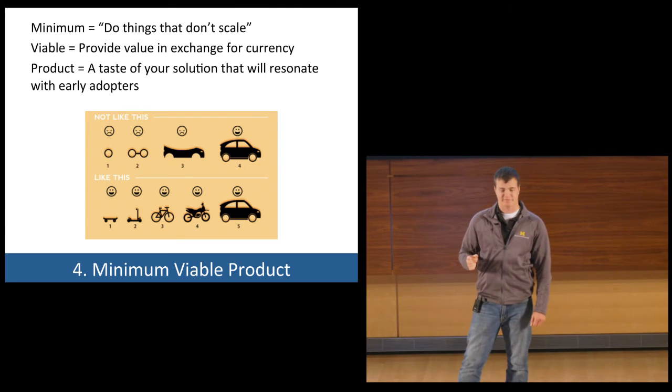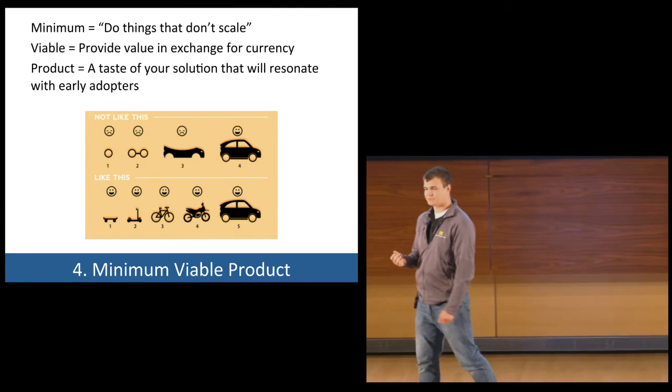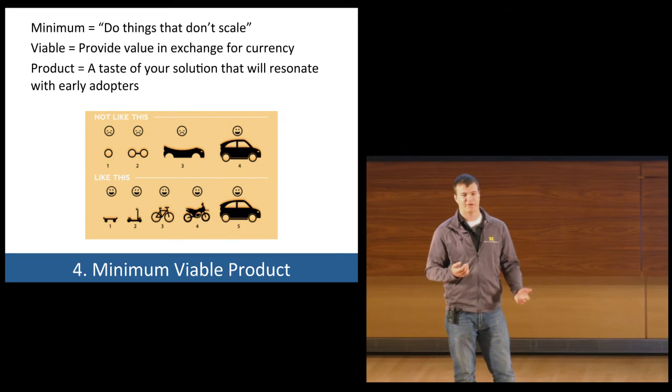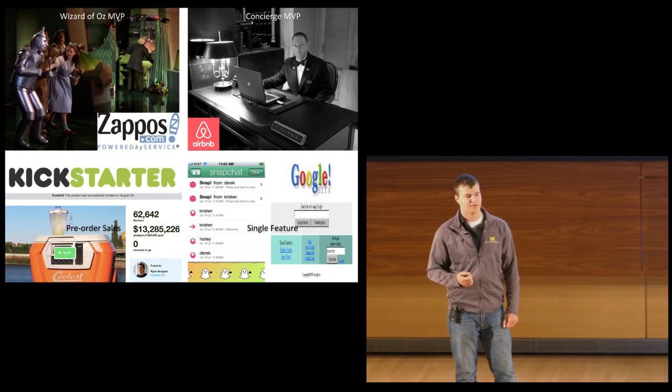After we've validated the demand, we can move on to manually building a minimum viable product. By doing things behind the scenes and manually, we can deliver value for our early adopters and learn a lot about how they actually use the product.